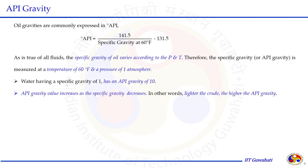Before going to the thermodynamic aspects, let us understand API gravity. The oil API gravity is one of the measures that classifies different types of crude oil. The degree API is defined as 141.5 divided by the specific gravity of that fluid at 60°F, minus 131.5. Specific gravity is defined as density of the fluid divided by the density of water at the same temperature. For example, when the specific gravity of water is 1, its degree API is going to be 10.